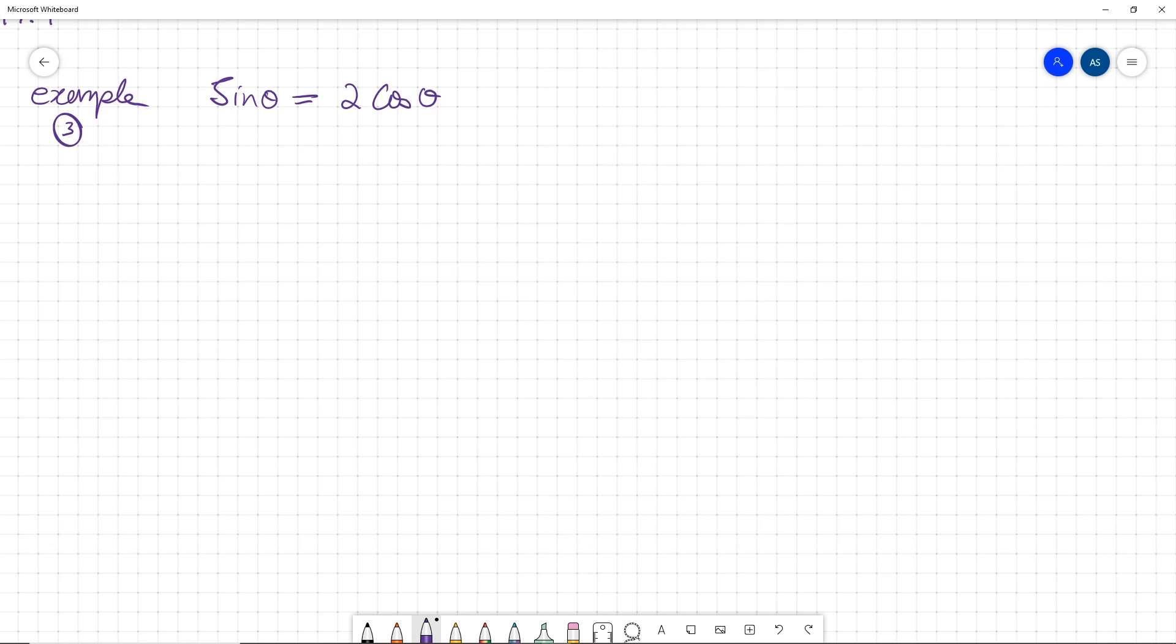In this next trigonometric equation, we don't have one trigonometric ratio, so first we are going to convert this into one. Divide both sides by cos, and we get tan theta equals two. Now this equation is in only one ratio, which is tan.